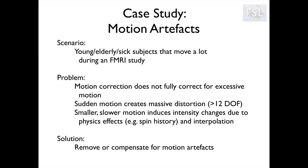For example, it interacts with B0 inhomogeneities, so sudden motion can create big distortions that cannot be removed by simply realigning the volumes. Also, if a point in the brain was in a certain slice in one volume and then, because the subject moved, it ends up in a different slice in the following volume, the same point in the brain is going to be excited in a slightly different way and will give back a slightly different signal. This phenomenon is called spin history, and again, this is something that simple realignment cannot correct for. So we may want to remove or compensate for motion artifacts in some other ways.